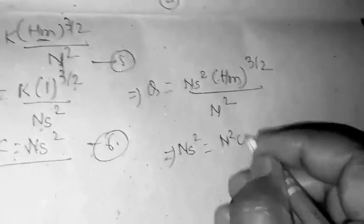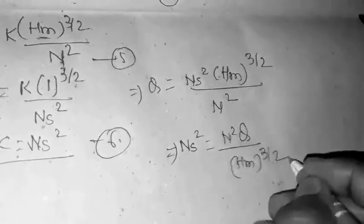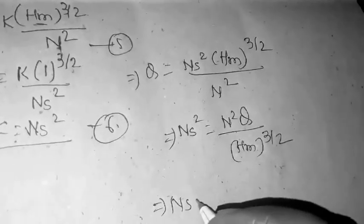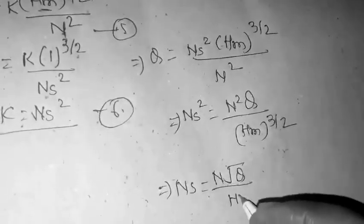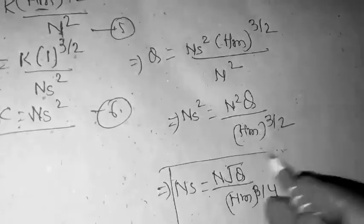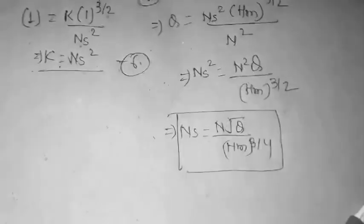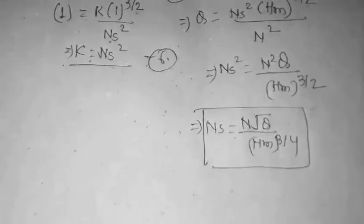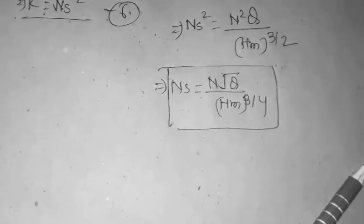Rearranging, N square equals K times Q upon HM to power 3 by 2. This implies that N is equal to N under root Q upon HM to power 3 by 4. This is the specific speed formula for centrifugal pumps.